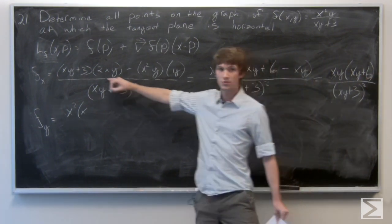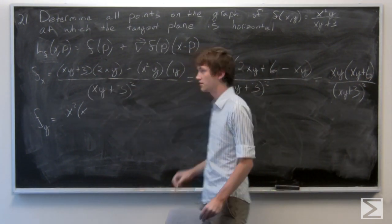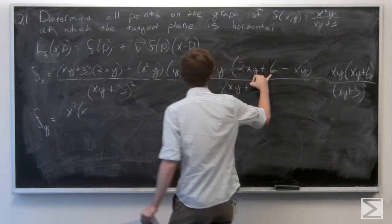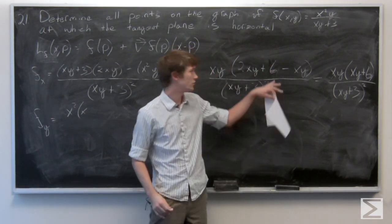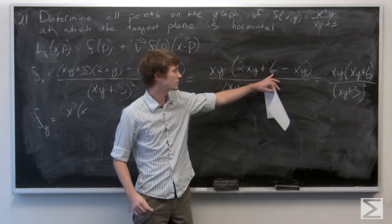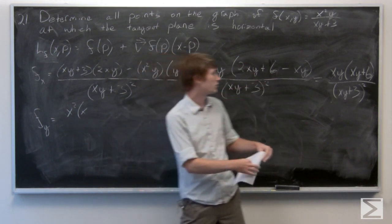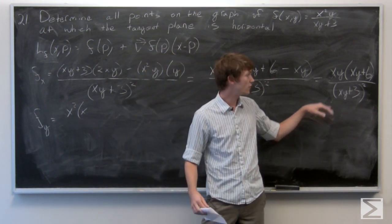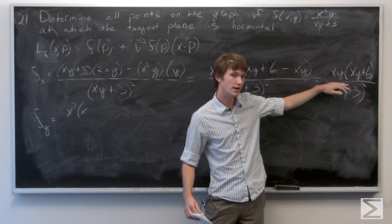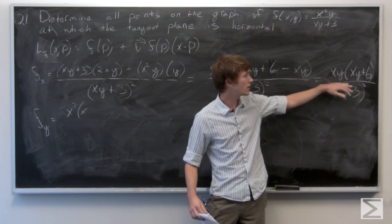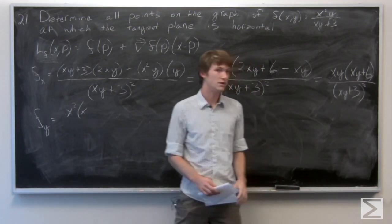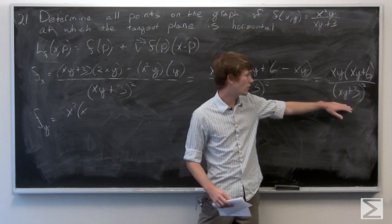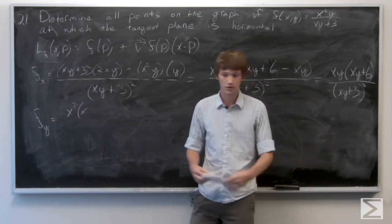A correction: I forgot to distribute the 2 to the 3, so go back and change the 3s to 6s in the partial derivative of f with respect to x. The corrected partial derivative of f with respect to x is xy times the quantity xy plus 6, over the quantity xy plus 3 squared.